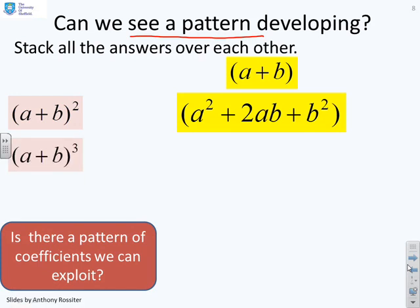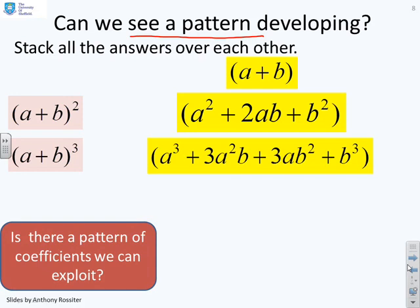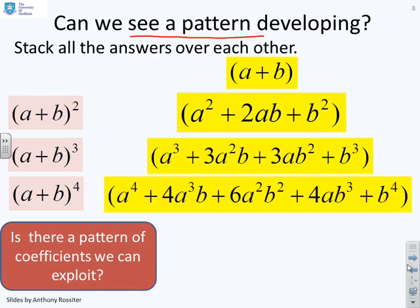Then we did A plus B cubed and this is what we got: A cubed plus 3A squared B plus 3AB squared plus B cubed. Then we did A plus B to the power of 4 and this is what we got. So the question is, is there a pattern here?